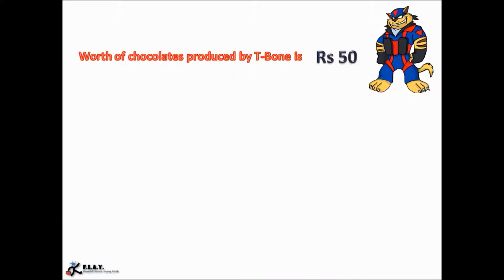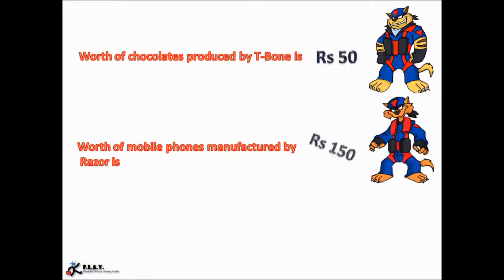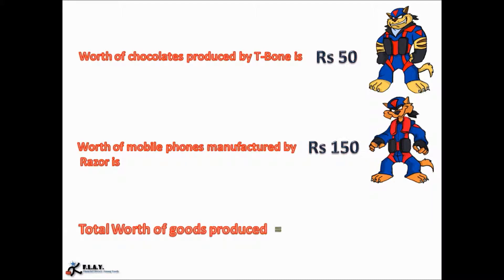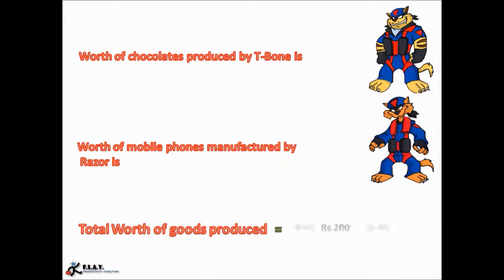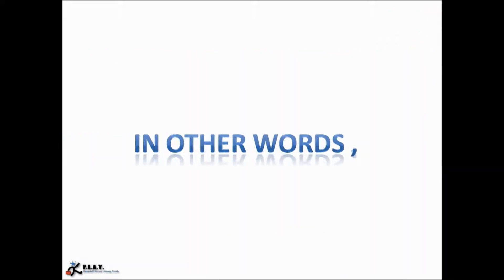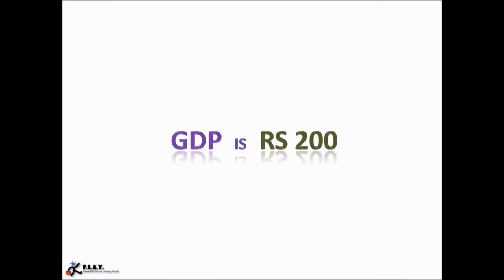So we have seen that the worth of the chocolates produced by T-Bone is rupees 50, and the worth of the mobile phones manufactured by Razor is rupees 150. Hence, the total worth of the goods produced is 50 plus 150, that is rupees 200. In other words, we can say that GDP is rupees 200.